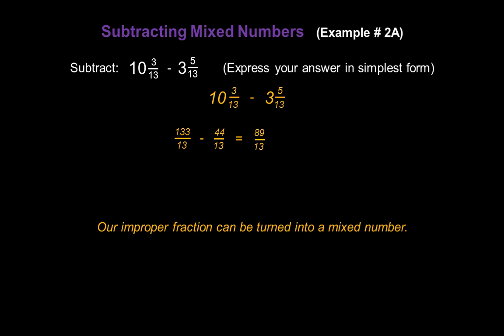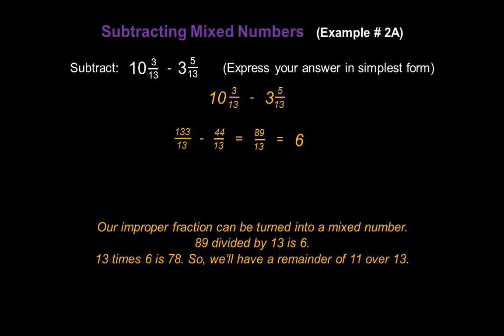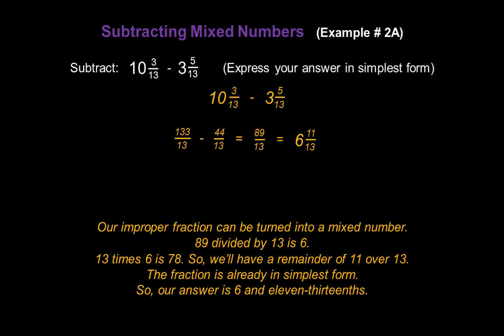Our improper fraction eighty-nine over thirteen can be turned back into a mixed number. Eighty-nine divided by thirteen is six, so six is the whole number portion. Since thirteen times six is seventy-eight, we have a remainder of eleven over thirteen. The fraction eleven-thirteenths is already in simplest form, so our answer is six and eleven-thirteenths.